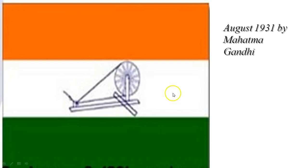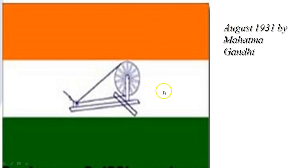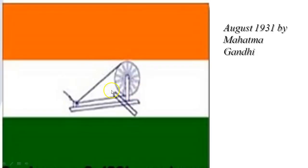Now let's talk about the next one — our second to last flag. This was August 1931. It was made again, and on the top was the red color. The importance of the red color was significant in this flag.